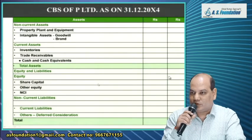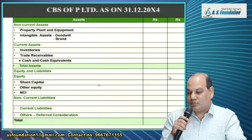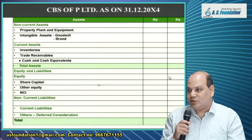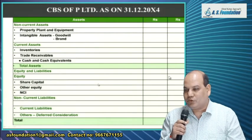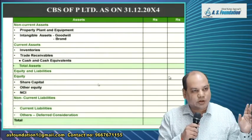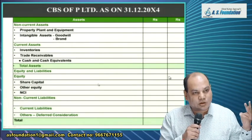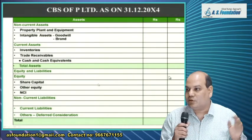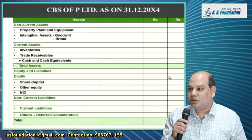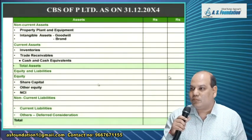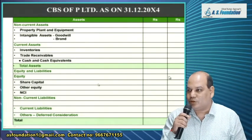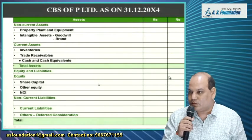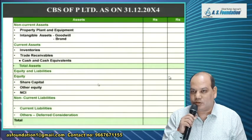Under current liabilities, write one more item: 'Others — Deferred Consideration.' It is in current liability because it is payable in the next year now — out of 3 years, 2 years are over, so the amount is payable within 12 months from the reporting date. Therefore deferred consideration becomes a current liability.